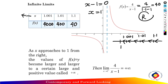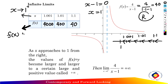As you can see, the values of x in this column are moving towards 1, so x is approaching 1 from the right-hand side — indicated with a positive sign. The values of f(x) — 40, 400, and 4000 — are moving towards positive infinity, meaning f(x) increases to positive infinity.